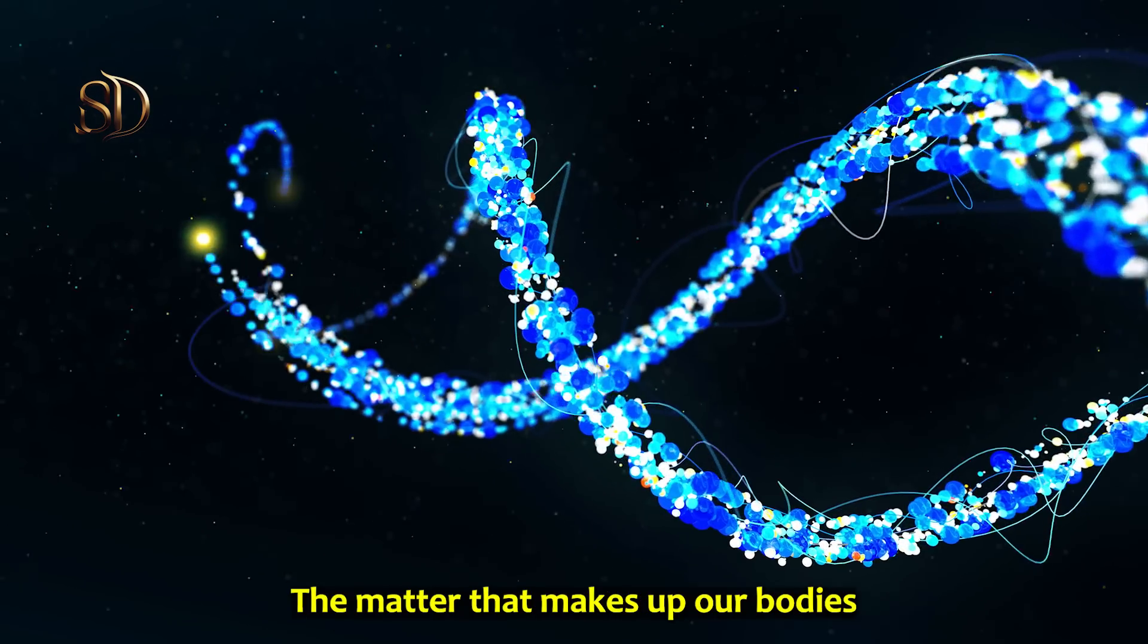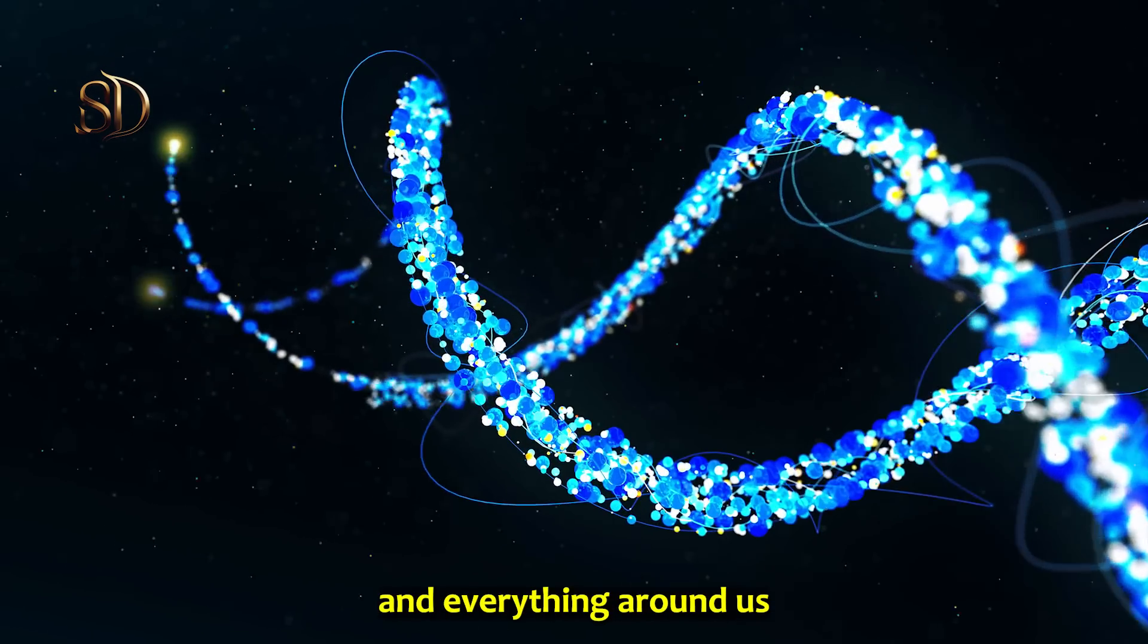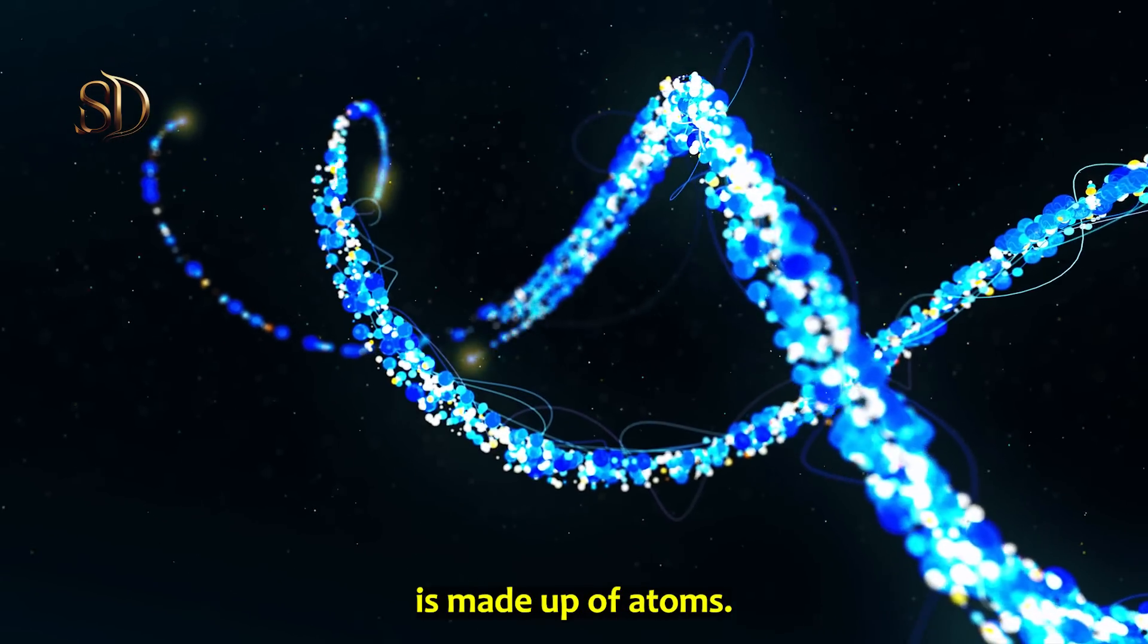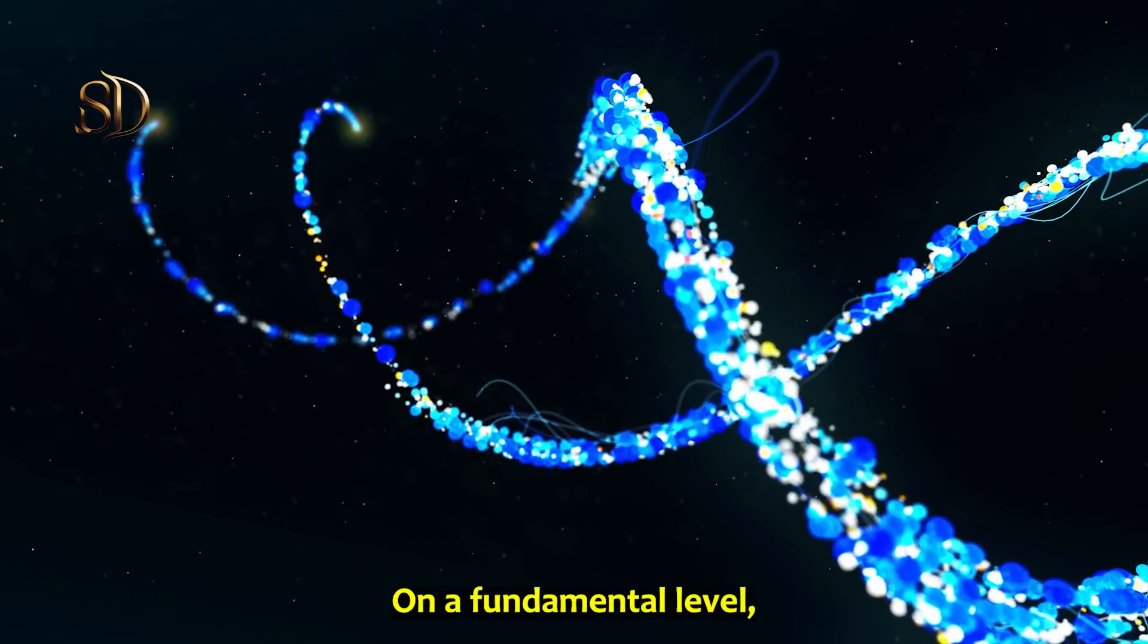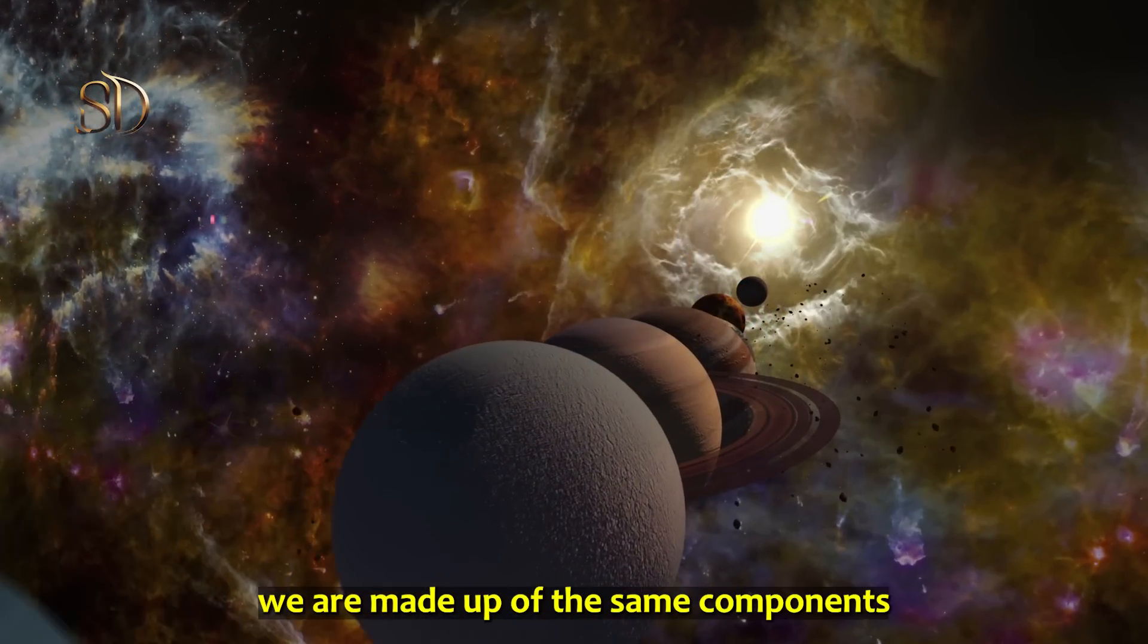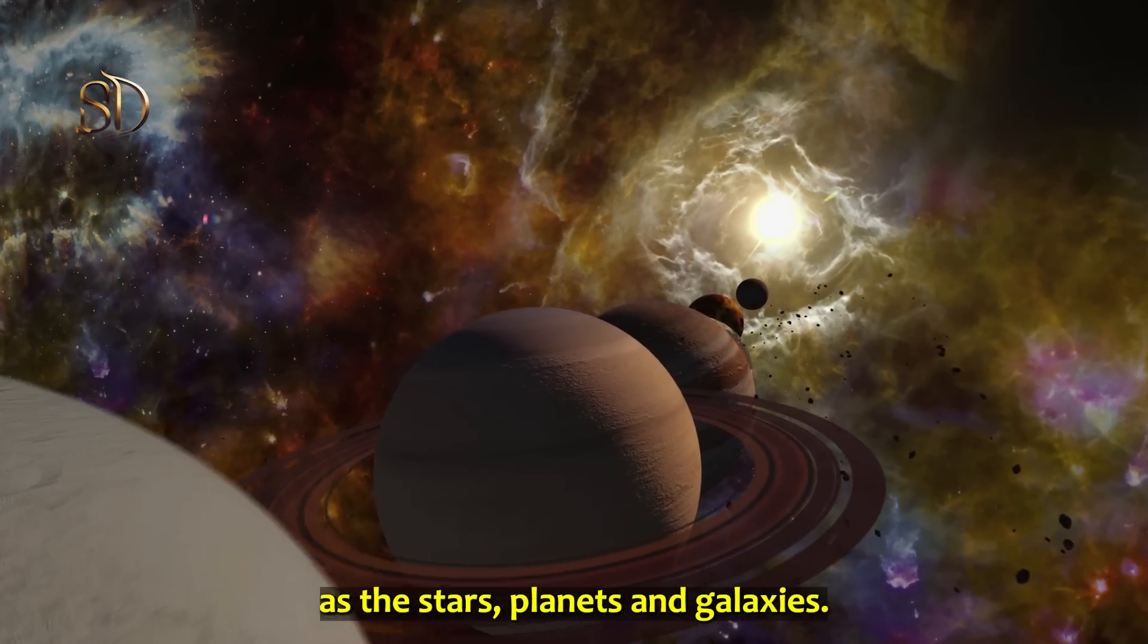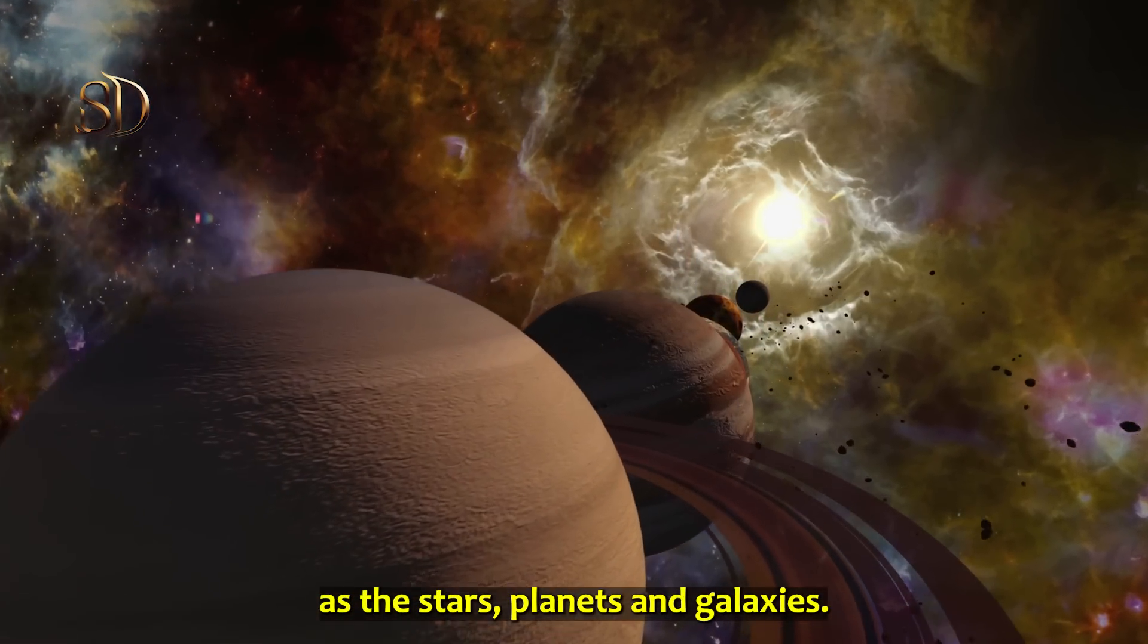The matter that makes up our bodies and everything around us is made up of atoms. These atoms are the same chemical elements found throughout the universe. On a fundamental level, we are made up of the same components as the stars, planets, and galaxies.